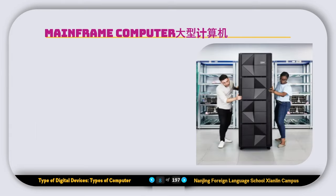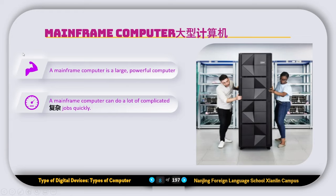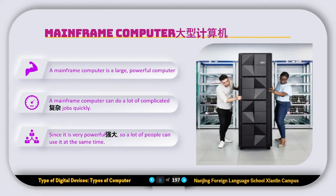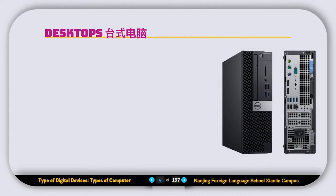The first type of computer is called the mainframe computer. A mainframe computer is a large, powerful computer that can do a lot of complicated jobs quickly. Since it is very powerful, a lot of people can use it at the same time.